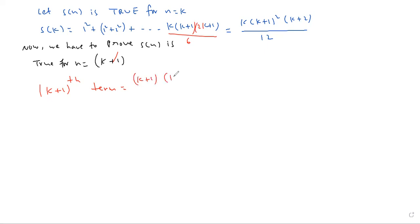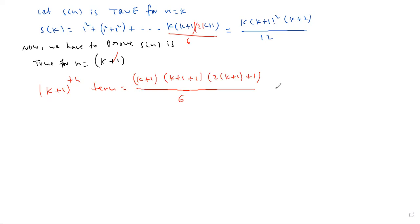The (k+1)th term can be written as (k+1)(k+1+1)(2(k+1)+1)/6, which simplifies to (k+1)(k+2)(2k+3)/6.